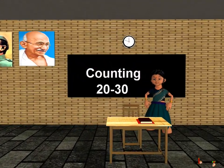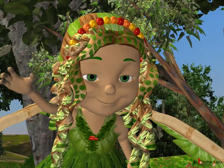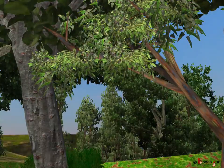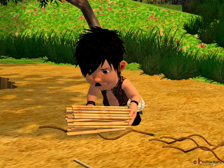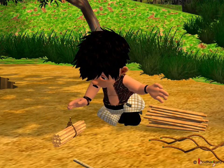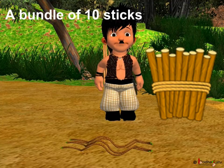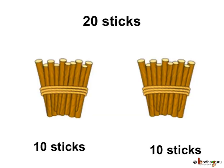Good morning children. Now you know how to count 20 things. Let us learn to count things more than 20. In the story, we saw it became easy for Bholla to count when the fairy gave a magical rope to him that made a bundle of 10 sticks. So, a bundle of 10 sticks means one 10. And when there are two bundles of 10 sticks, it means two 10s or 20.